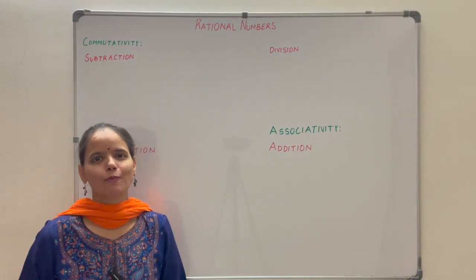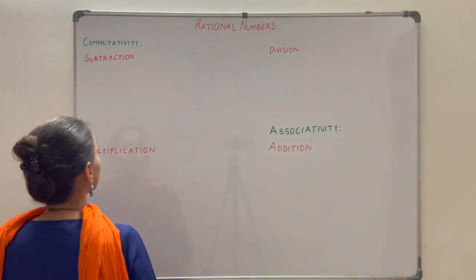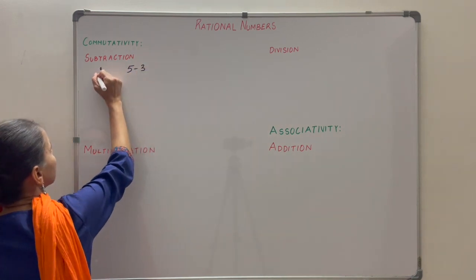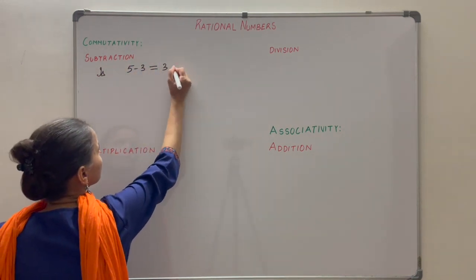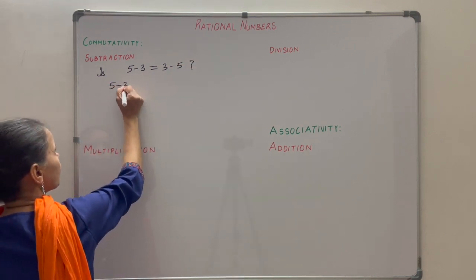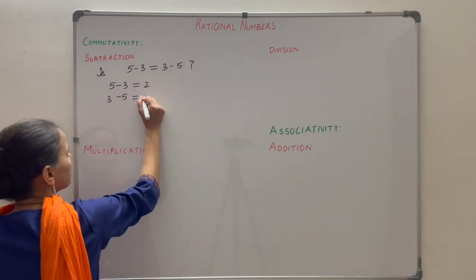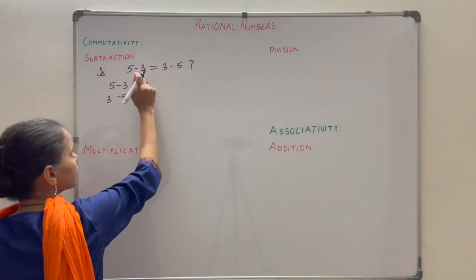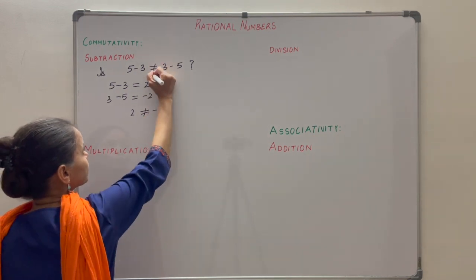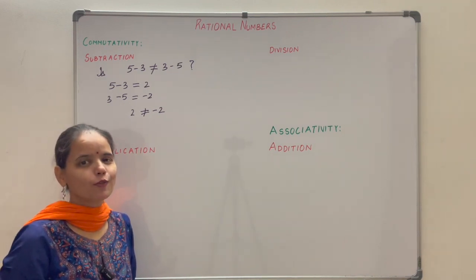Subtraction is not commutative for whole numbers. Let us understand this with the help of one example. Suppose you have two whole numbers 5 and 3. Is 5 minus 3 equal to 3 minus 5? When you subtract 3 from 5 you get 2, and when you subtract 5 from 3 you get minus 2. Minus 2 and 2 are not equal. That is why we say that subtraction is not commutative for whole numbers.